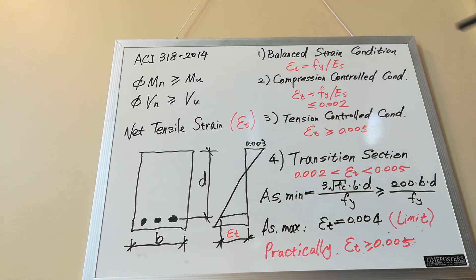An example of this tension-controlled section is most of the flexural members, such as beams, which have to be designed as tension-controlled.